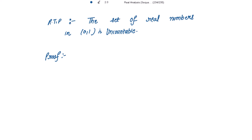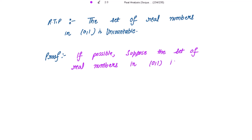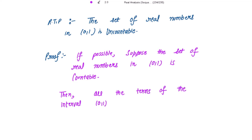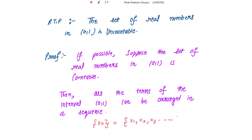Suppose the set of real numbers in the open interval (0,1) is countable. A countable set has the property that its terms can be arranged in a sequence. So if this is a countable set, then all the terms of the interval (0,1) can be arranged in a sequence — let's say xₙ — that is x₁, x₂, x₃, and so on. These are the terms of the open interval (0,1).